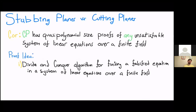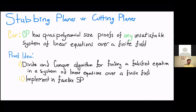So how do we prove the finite field result? First, we give a generic divide-and-conquer algorithm for finding a falsified equation in a system of linear equations over a finite field, given some assignment to it. Then we show you can implement this divide-and-conquer algorithm in stabbing planes — which is a very divide-and-conquer style proof system. And finally, we use our translation of face-like stabbing planes into cutting planes.